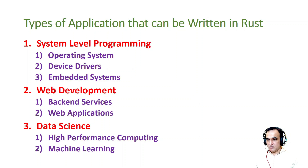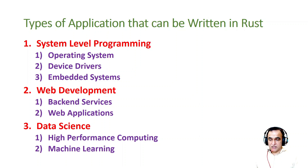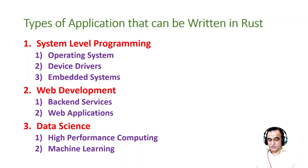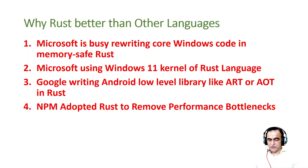Now, types of applications that can be written in Rust: system-level programming — you can develop your own operating system. It was only possible to build an operating system using C and C++, but now Rust is similar in capability. You can build an operating system that is more reliable than one generated by C or C++. You can also make device drivers — those built in Rust are more reliable and have better performance. Embedded systems, web development, backend services, web applications, data science, high-performance computing, and machine learning — in all major categories of the computer world, you can use Rust.